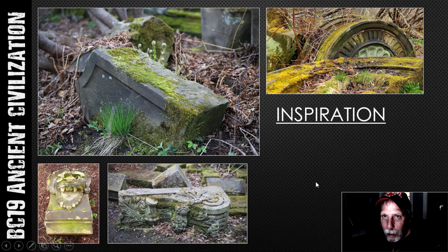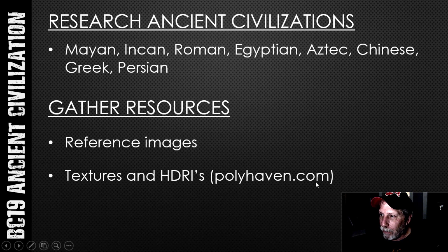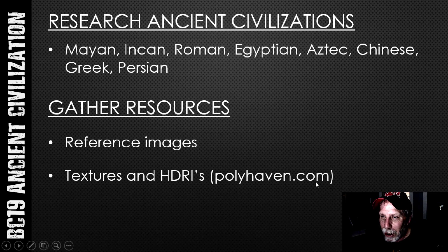I'm going to talk a little bit about the process, how you could do it, and the expectations. Likely what you'll want to do is do some research on ancient civilizations. You could choose something like Mayan, Incan, Roman, Egyptian, Aztec, Chinese, Greek, Persian, or even alien. You can do pretty much anything you want, but it's always a good idea to do a little background research, read a little bit, and look at images.